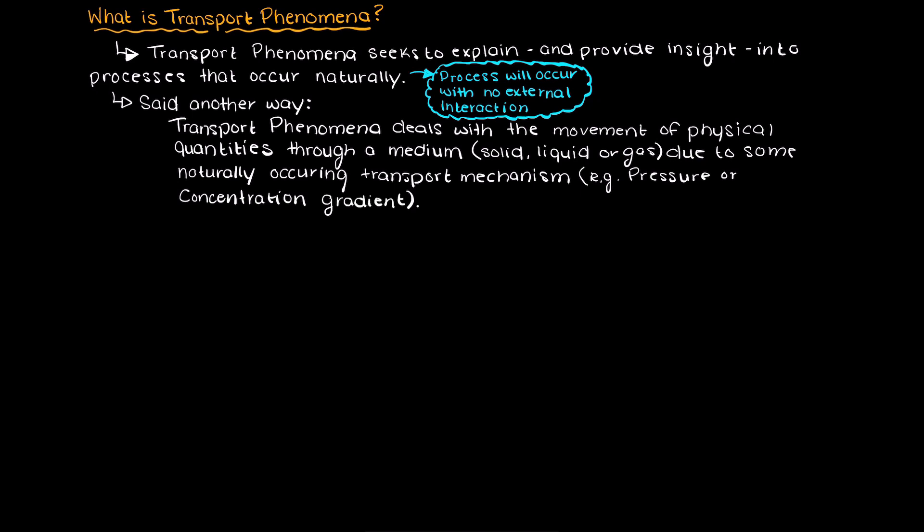All of these naturally occurring processes fall into three main categories: the transportation of mass, the transportation of momentum, and the transportation of energy.